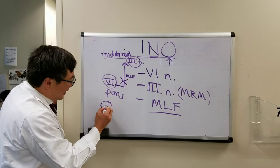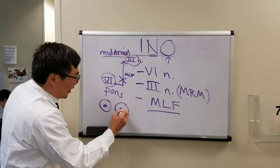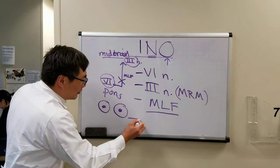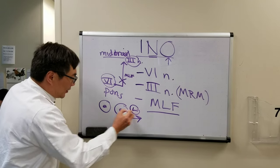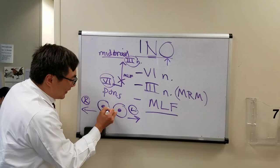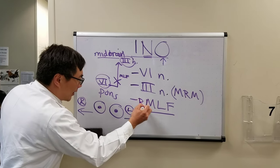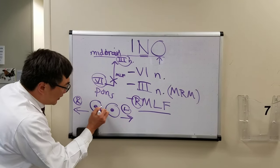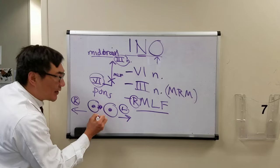And so what that looks like clinically is, if these are your eyes, if you attempt to look this direction to the left - this is to the right - if you have an MLF lesion on the right, right medial longitudinal fasciculus, you won't be able to adduct very well.